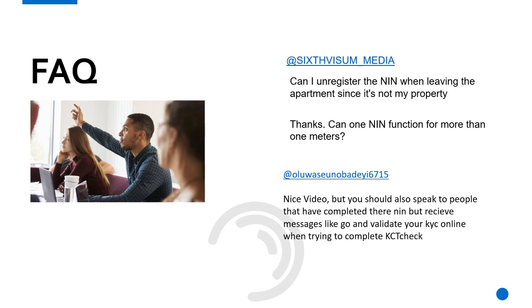Once you've linked your NIN and have an issue, you cannot use that NIN to link any meter again — so take note of that. That's hands-on experience I got when dealing with my own issue at the NEPA office. From Luashen: 'Nice video, but you should speak to people who completed their NIN but still receive the message: go and validate your KYC.' That is exactly why I'm doing this video — I've gone through all your comments and addressed them one by one.